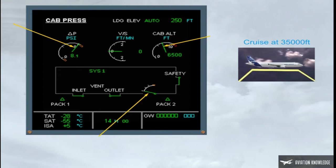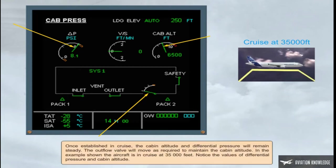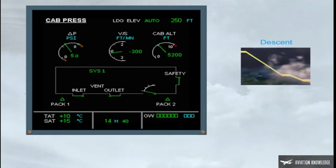In the example shown, the aircraft is in cruise at 35,000 feet. Notice the values of differential pressure and cabin altitude. During the descent phase, the pressure rate is optimized so that the cabin reaches landing field pressure just prior to landing. For passenger comfort, the automatic function will limit the rate of cabin descent to a maximum of approximately 750 feet per minute.